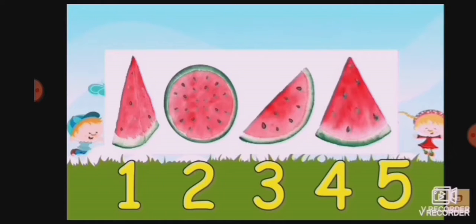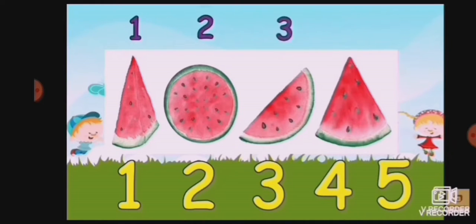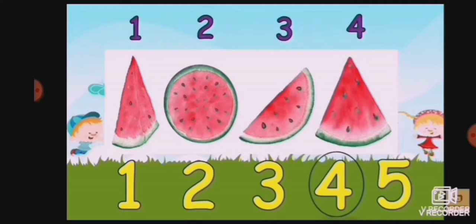Now next, how many watermelons do we have? Count: 1, 2, 3, 4. How many watermelons do we have? Circle the correct number. 4. Very good.